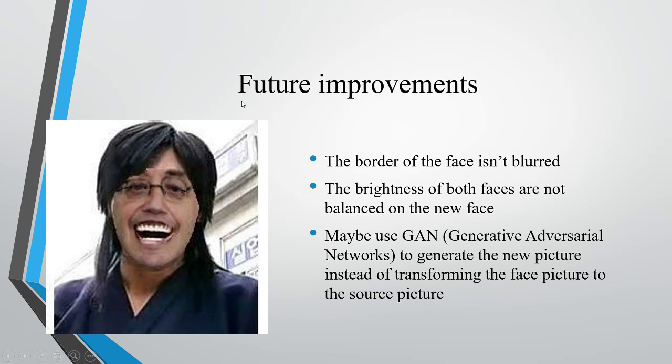There are still many improvements that can be made on our project. First, the border of the face isn't blurred, so it looks weird. Second, the brightness of both faces are not balanced on new faces, so we can see that the nose part is darker. Also, maybe we can use GAN, Generative Adversarial Networks, which is invented recently to generate new pictures from noise picture and compare it with the features instead of transforming the face picture to the source picture.